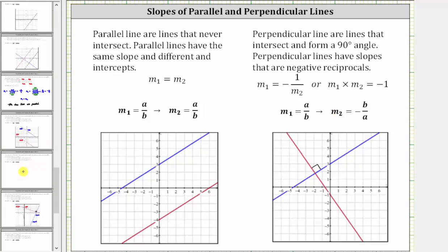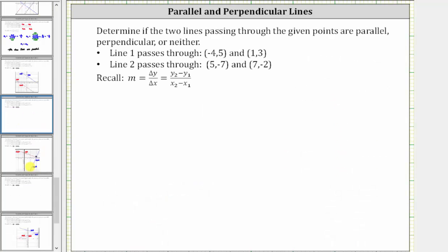To determine the slopes, we will use the slope formula, which is the change of y divided by the change of x. Or if we have ordered pairs, we have the quantity y sub two minus y sub one, divided by the quantity x sub two minus x sub one.